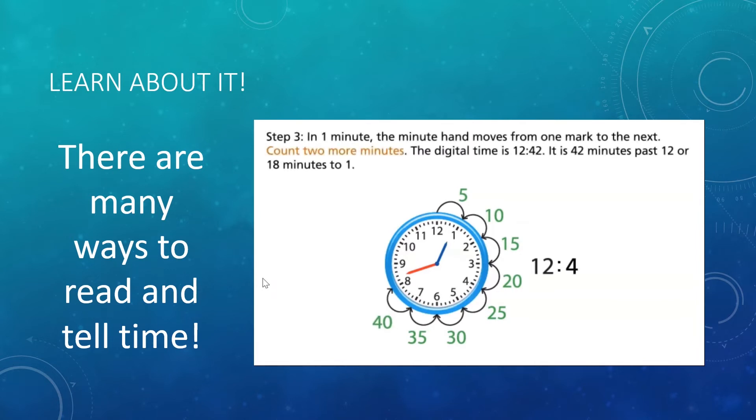Step 3. In 1 minute, the minute hand moves from one mark to the next. Count 2 more minutes. The digital time is 12:42. It is 42 minutes past 12 or 18 minutes to 1.